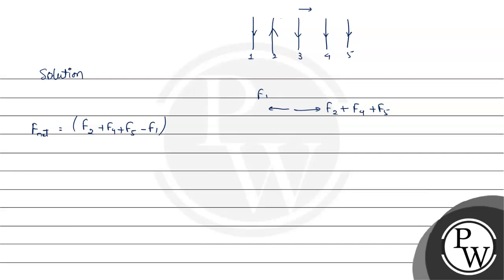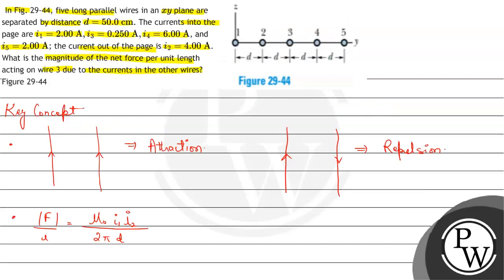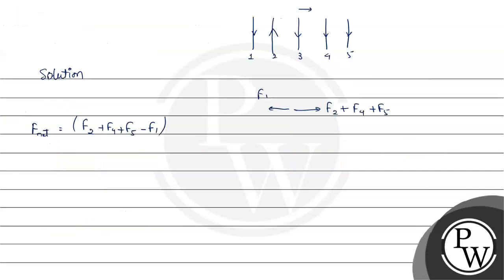Now let us calculate it. In all of the forces, mu0 into I3 upon 2 pi will be constant. We will take them common: mu0 I3 upon 2 pi is constant. Now for F2, I2 upon distance between 2 and 3, so it will be I2 upon D. Plus F4 will be I4 upon D. Now F5 will be I5 upon 2D because their distance is now 2D. F1 will be I1 upon 2D because their distance is 2D. Now let us take D also common.